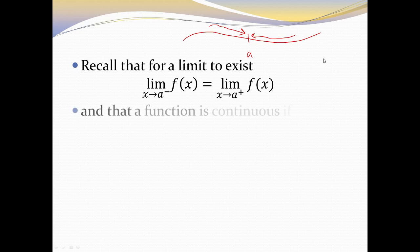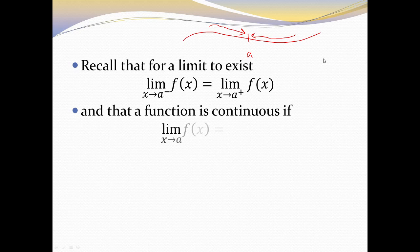From the previous lesson, the function is continuous if the following is also true: if the limit as x goes to a exists, then this limit is equal to the function evaluated at a. For most functions this is not a problem, but for piecewise functions this can be.